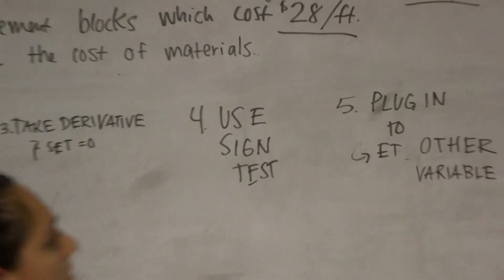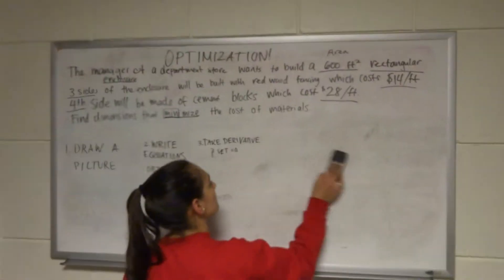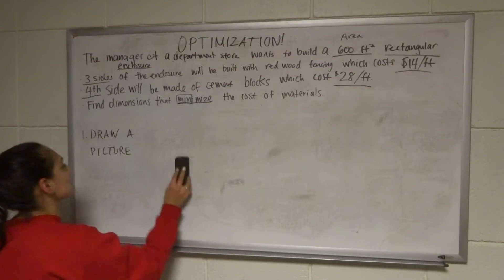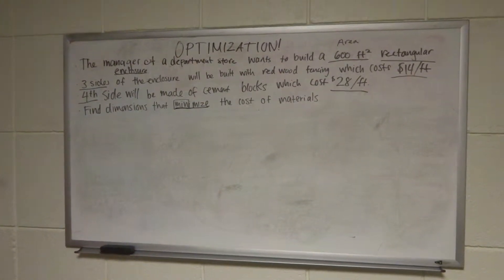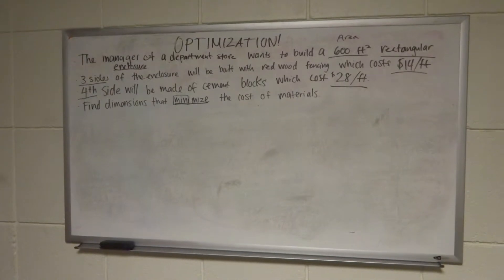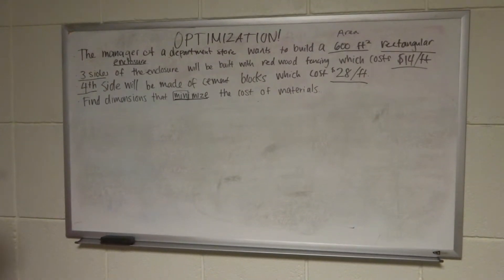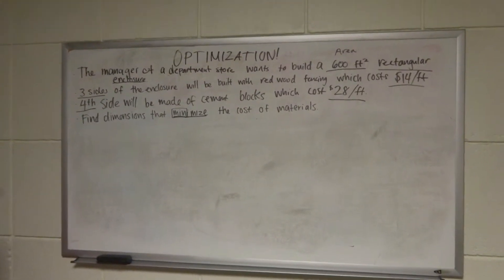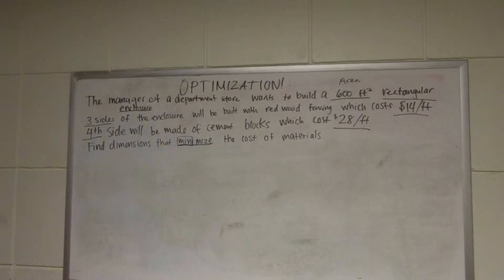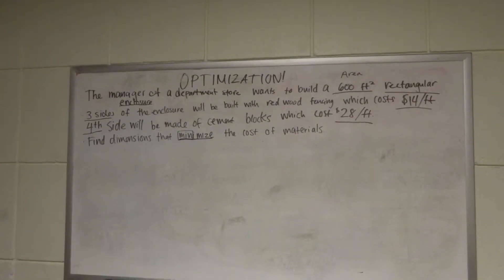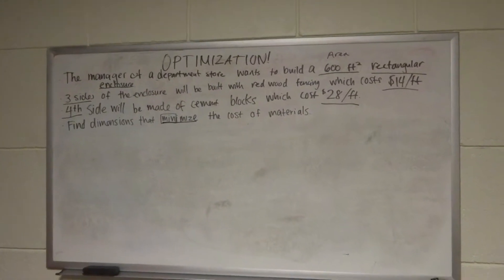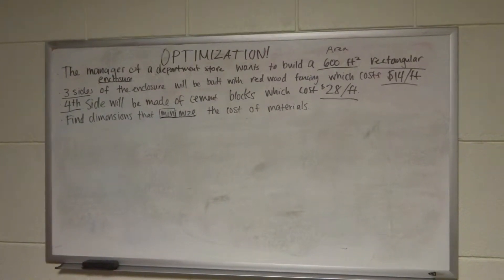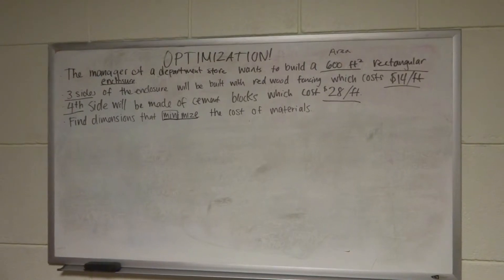So I'm going to erase these because I have very small amount of board space. The problem we're going to be solving is about a manager of a department store who wants to build a 600 square foot rectangular enclosure. Three sides of the enclosure will be built with redwood fencing which costs $14 per foot, and the fourth side will be made of cement blocks which costs $28 per foot.